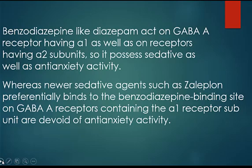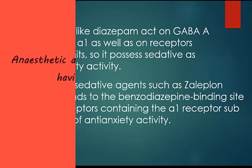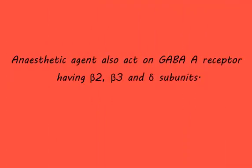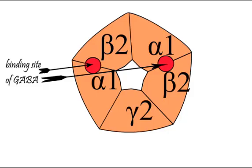Anesthetic agents also act on GABA-A receptors having beta-2, beta-3, and delta subunits. The most commonly found GABA-A receptor is a pentamer comprising 2 alpha-1, 2 beta-2, and a gamma-2 subunit.